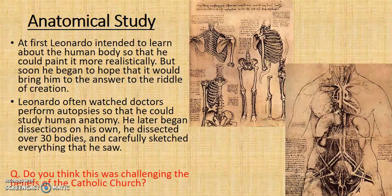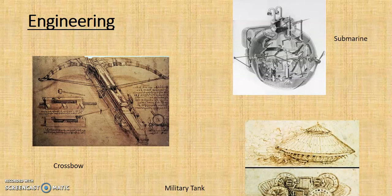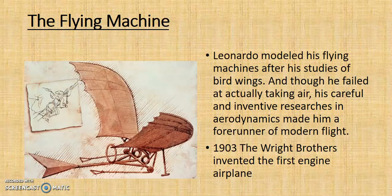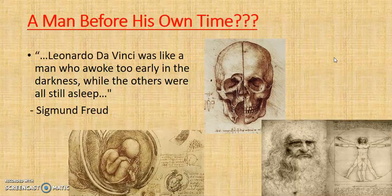Leonardo was fascinated by people — if he saw an interesting face on the street he would draw it in his notebook, and sometimes he followed the person home to finish the drawing. He dissected more than 30 bodies of men and women in order to study the human form more closely, contributing more to medical science than we often realize. He also had a great interest in nature, plants, and animals — he worked out how rocks were formed and how to tell the age of a tree by counting its rings. His inventions include the tank, submarine, military crossbow, and a flying machine that the Wright brothers would base their first plane on, giving him ideas of aerodynamics. He was truly a man ahead of his time.